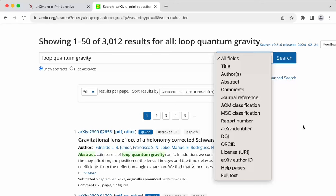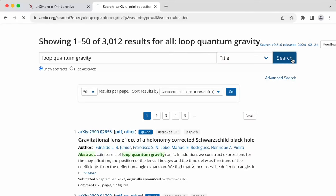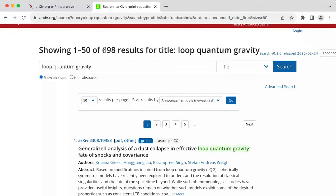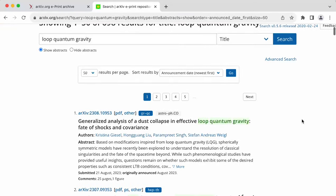Now, let's say you want to narrow it down to title. So you select title, you say search, and you can see that it's showing you about 700 results.